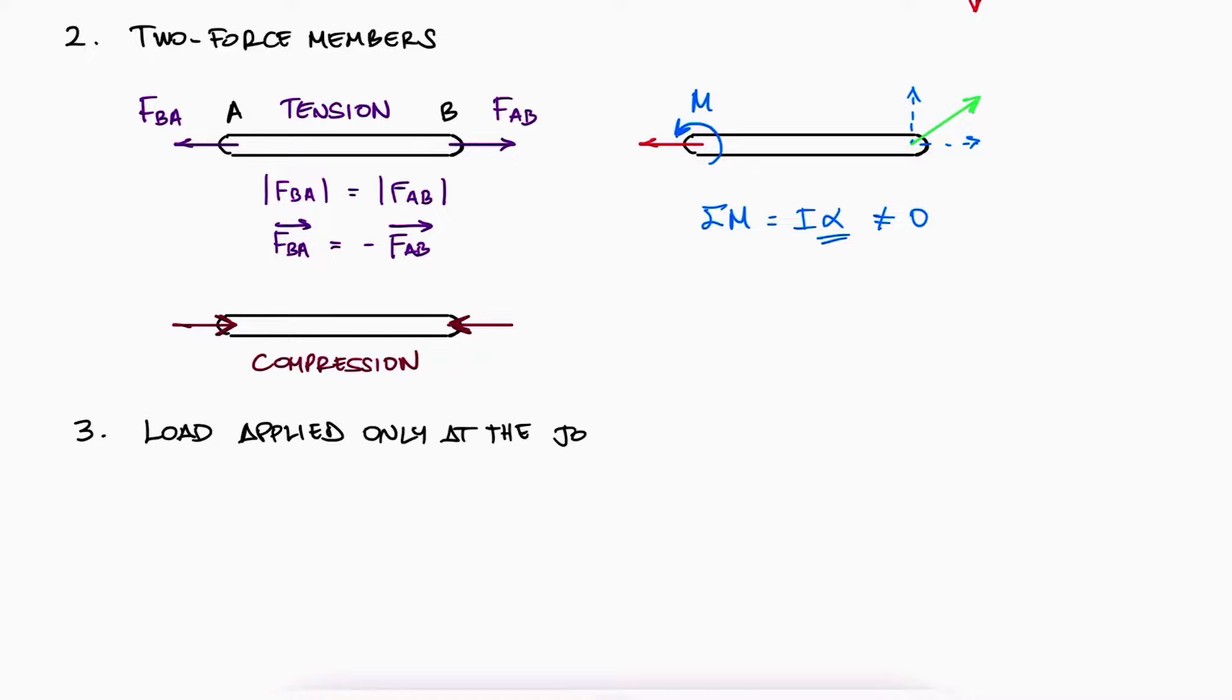Loads are only applied at the joints. We will never have loads applied in the middle of a member. This is a direct consequence of our first two assumptions. Since all joints are pinned, the members cannot carry bending moments, which should exist if a force was located somewhere between the joints.